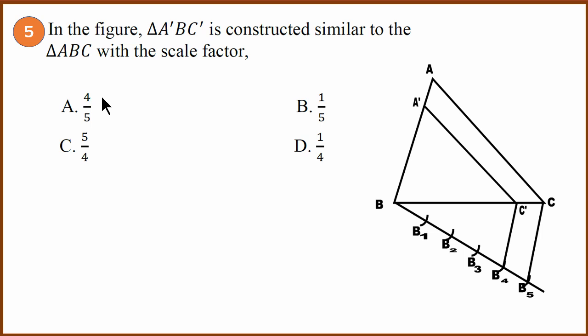Fifth one. Again scale factor in units. We need to find the ratio of the sides. In this case, remember the new triangle is smaller than the old triangle, which means that the scale factor will be less than 1. So BC dash divided by BC. BC dash is 4 units and BC is 5 units. So therefore it will be 4 divided by 5. Answer is A.